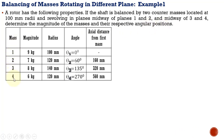We are provided with four different masses and their magnitudes. The radius of rotation of these four masses are provided and we have to take mass one as reference. The angle corresponding to mass one is taken as zero degree — it is going to be located horizontally — and the other angular positions for mass two, mass three, and mass four are given with respect to the reference mass one. The axial distances are also provided: mass two is 160 mm from mass one, mass three is 320 mm, and mass four is 560 mm from mass one.